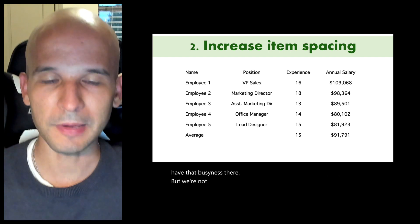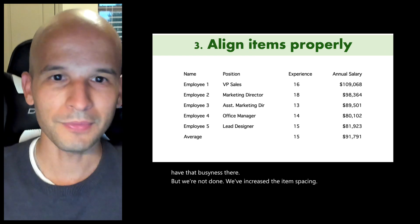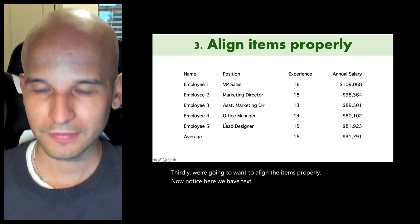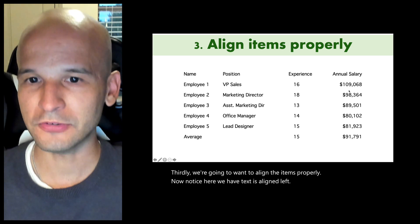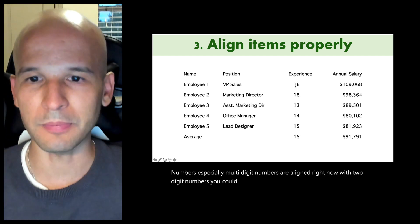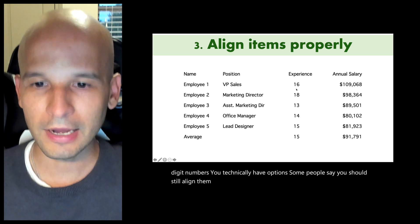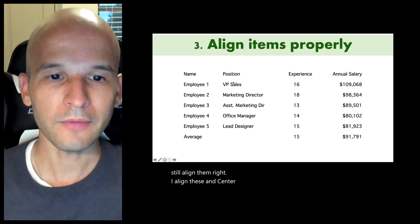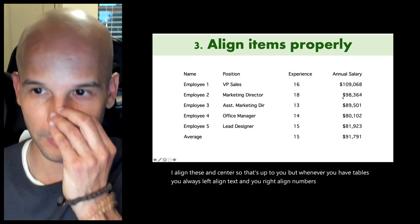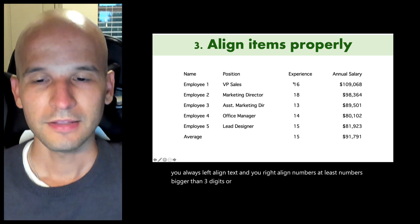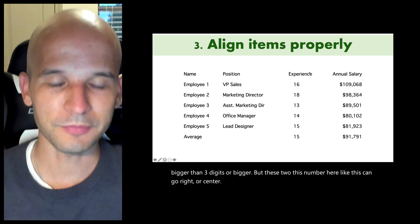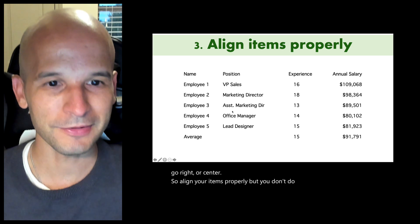We've increased the item spacing. Thirdly, we're going to want to align items properly. Text is aligned left. Numbers, especially multi-digit numbers, are aligned right. With two-digit numbers, you have options — some people say align them right, but centering works too. Whenever you have tables, you always left-align text and right-align numbers, at least numbers three digits or bigger. What you don't do is center text in a table.